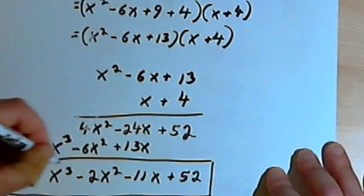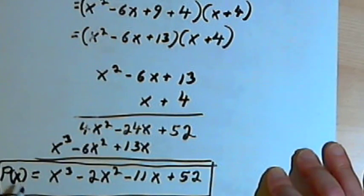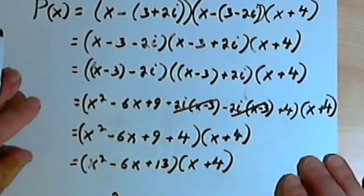So P of x would equal x to the third minus 2x squared minus 11x plus 52. So that would be the cubic polynomial written in standard form.